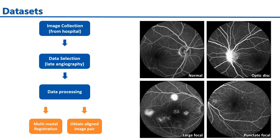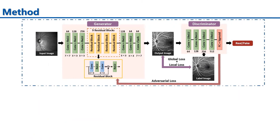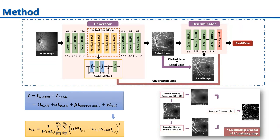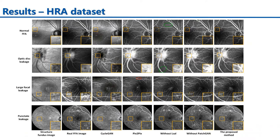large focal leakage, and punctate focal leakage. The proposed method needs paired images, but the collected images are always unpaired, so data processing is needed. The proposed FA image generation model is mainly based on conditional GAN. To ensure that the generated FA image resembles the label image and accurately generates the fluorescence leakage, we formulate the loss function as a combination of global and local loss. The local loss is the core of the proposed method, used to make the network concentrate more on vascular and leakage structure reconstruction.